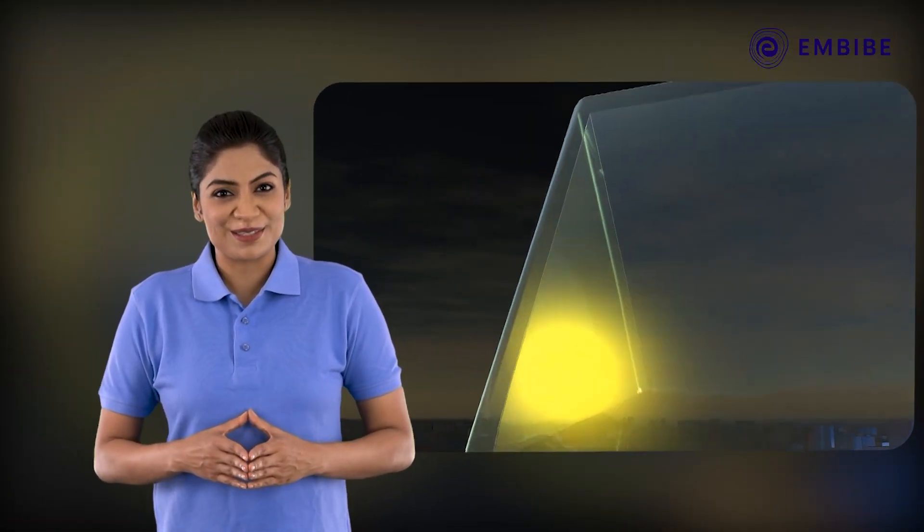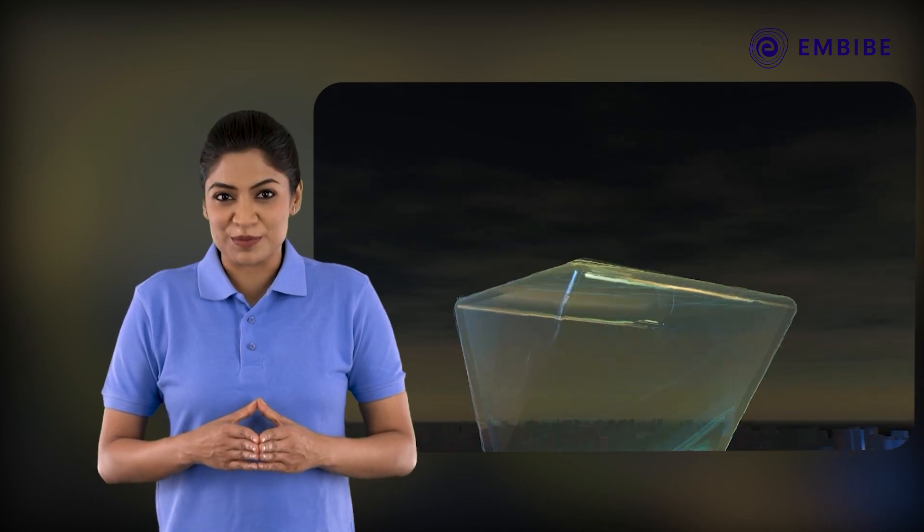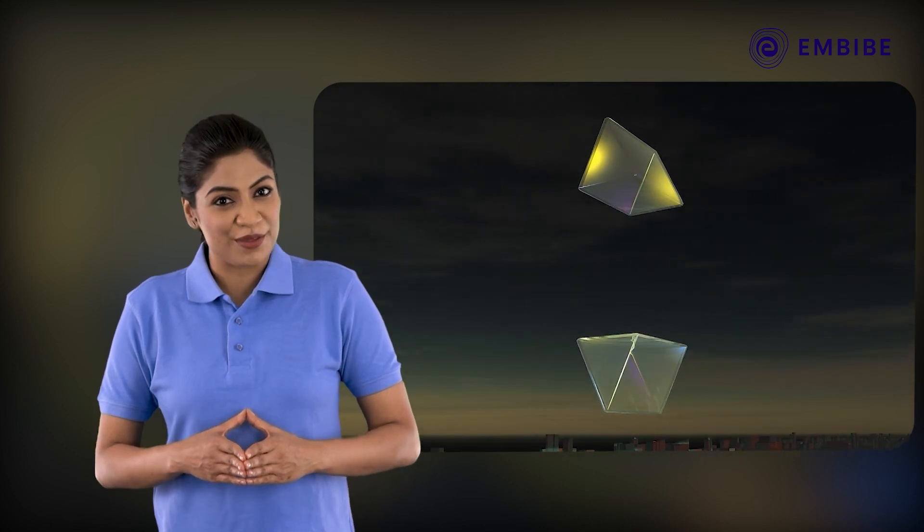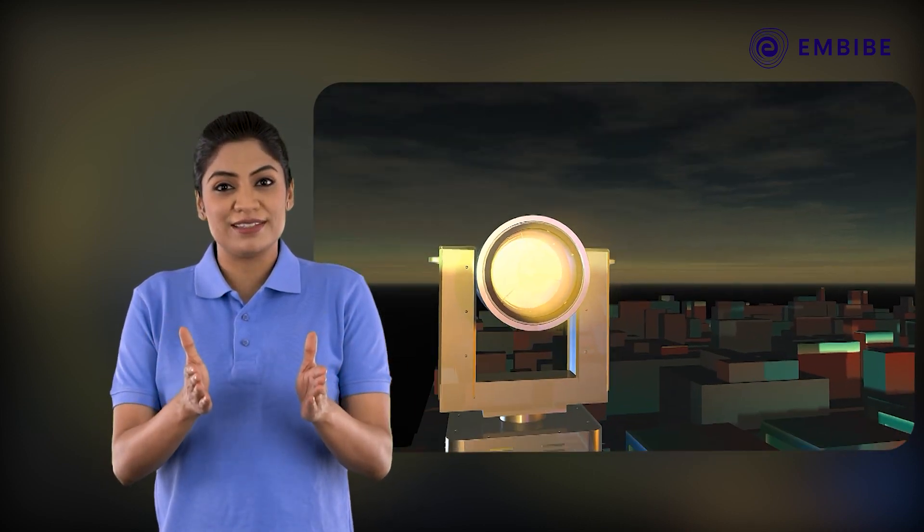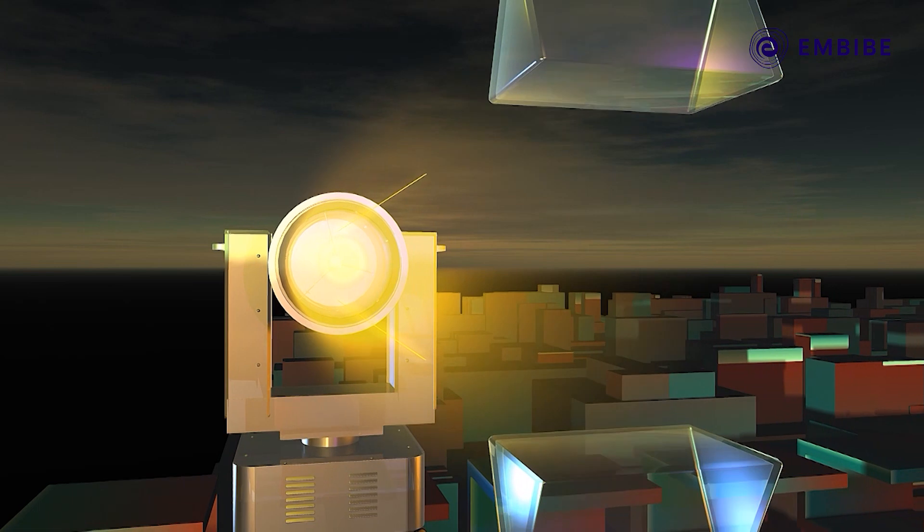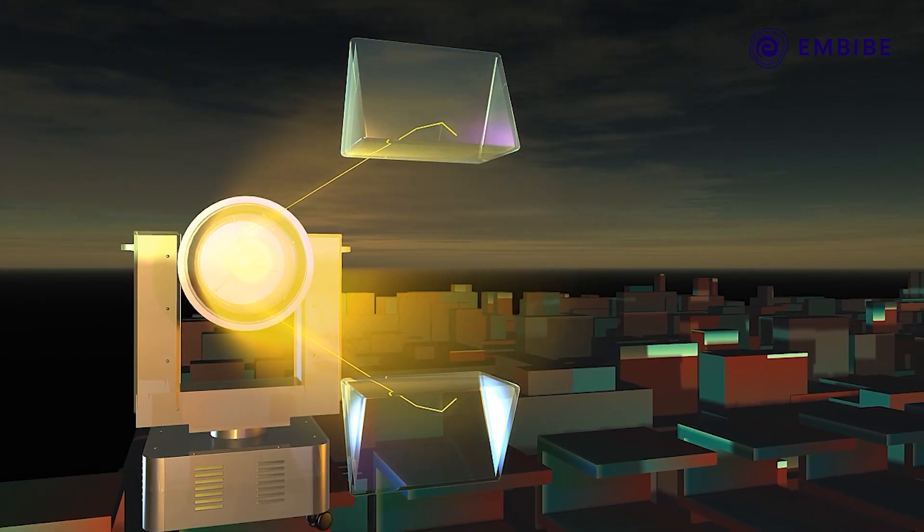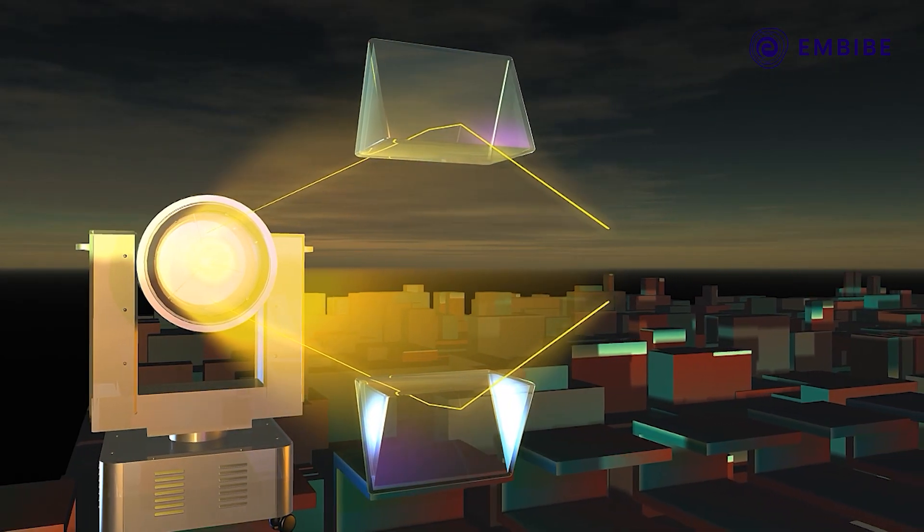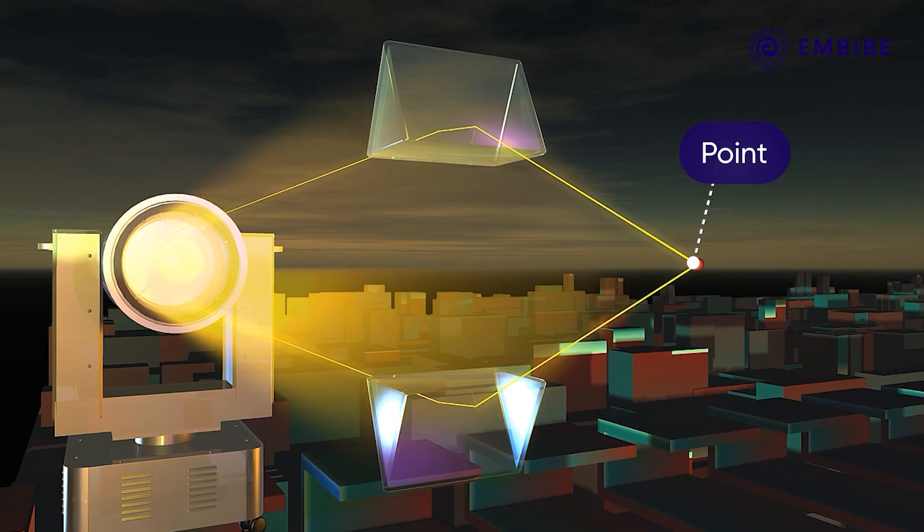Convex lens. Arrange two prisms so that their rectangular rough surfaces are facing each other. The parallel rays incident on the prisms emerge on the other side after refraction and intersect at a point.